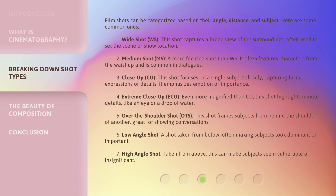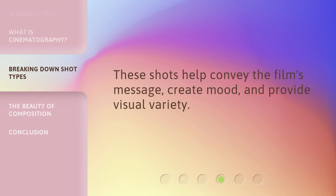4. Extreme Close Up (ECU): Even more magnified than CU, this shot highlights minute details, like an eye or a drop of water. 5. Over the Shoulder Shot (OTS): This shot frames subjects from behind the shoulder of another, great for showing conversations. 6. Low Angle Shot: A shot taken from below, often making subjects look dominant or important. 7. High Angle Shot: Taken from above, this can make subjects seem vulnerable or insignificant. These shots help convey the film's message, create mood, and provide visual variety.